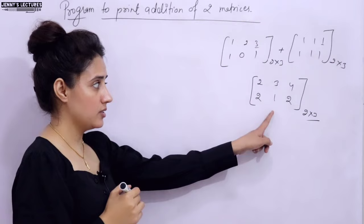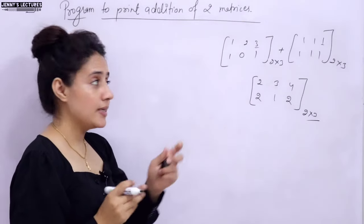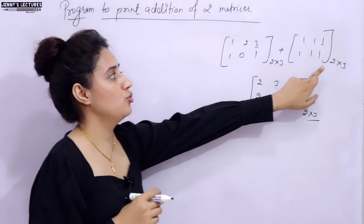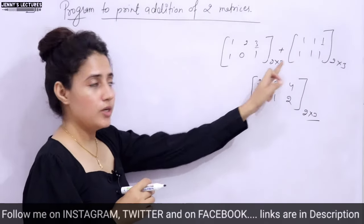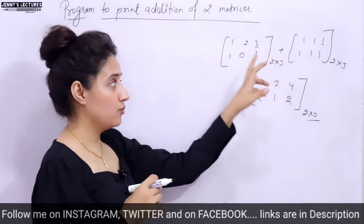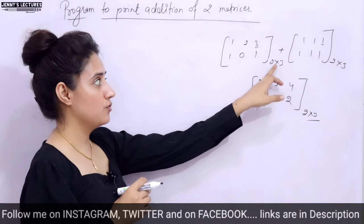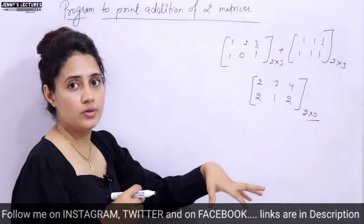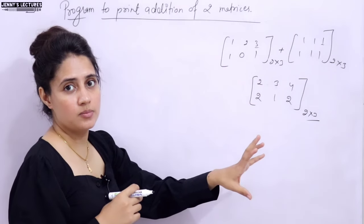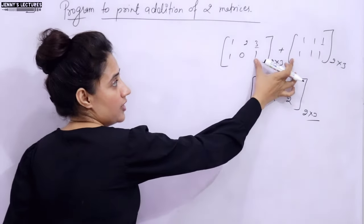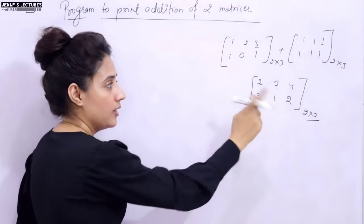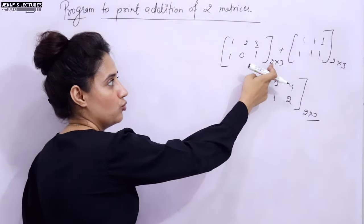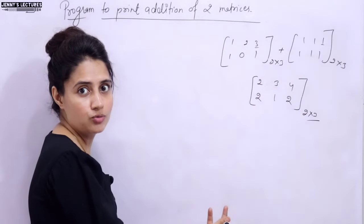This is what I want to print. First, you need to take care that when you want to add two matrices, the dimensions should be the same. If the first matrix is 2x3, the second should also be 2x3. If the first is 2x3 and the second is 3x2 or 3x3, then addition is not possible. Both should be of the same dimension, and the resultant matrix will also be of that same dimension, like 2x3.